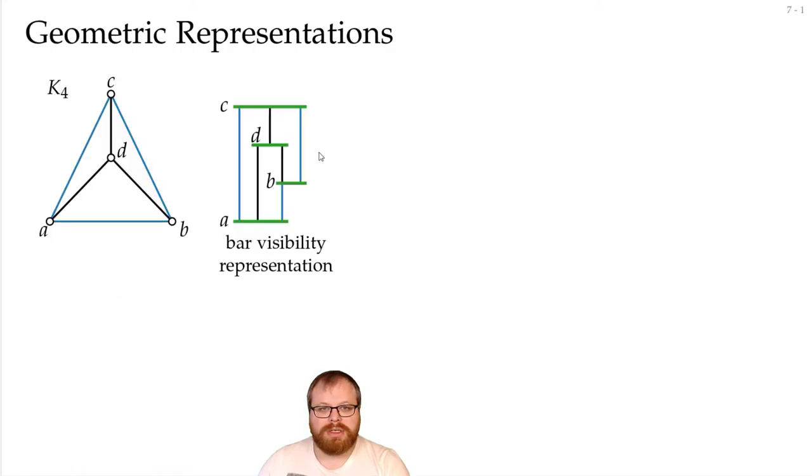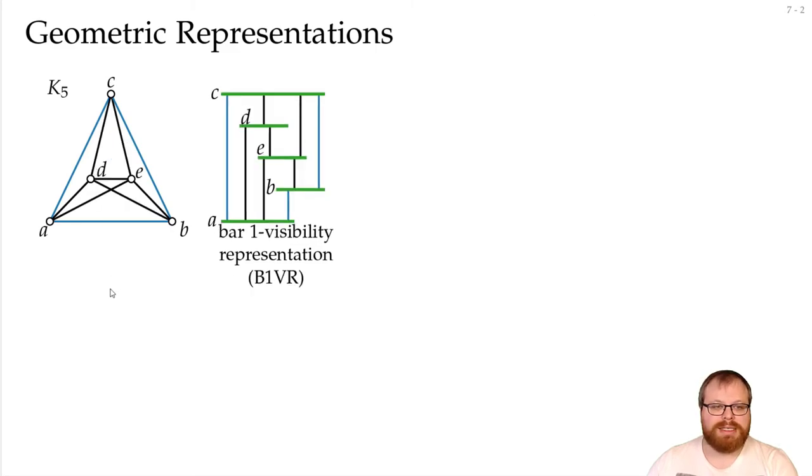Instead of node link drawings, of course, we can also use geometric representations. We learned about bar visibility representations of planar graphs, and we can extend this to non-planar ones. For example, bar 1 visibility representation. If we look at the K5 here, and we have a bar visibility representation, we cannot do the whole one, because it is not planar, and in fact we don't have the edge between D and B.